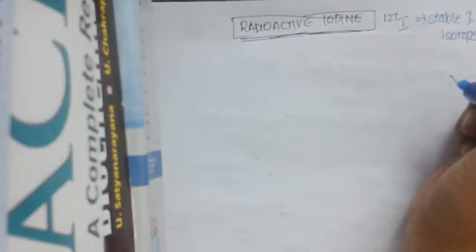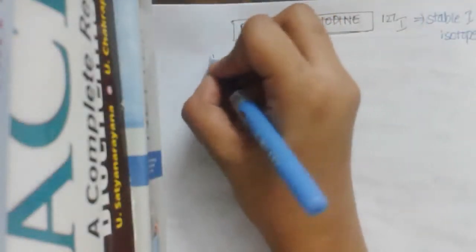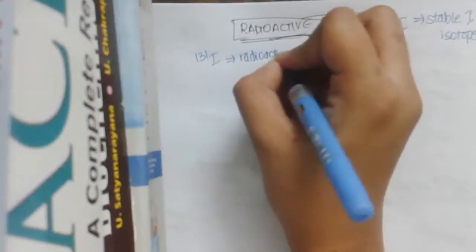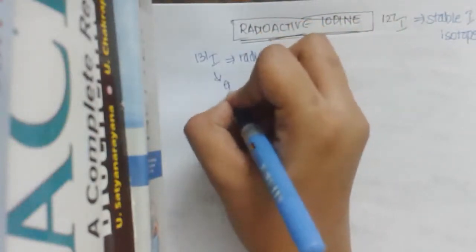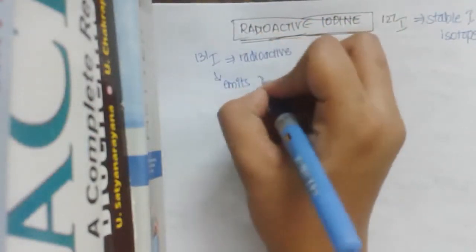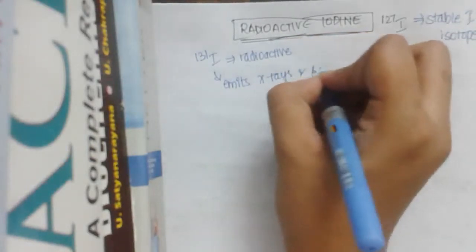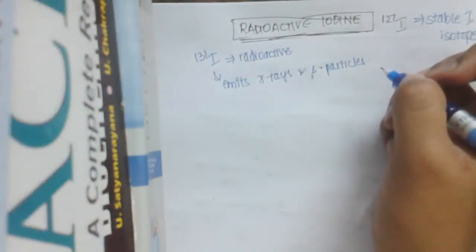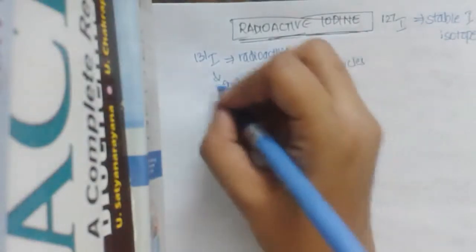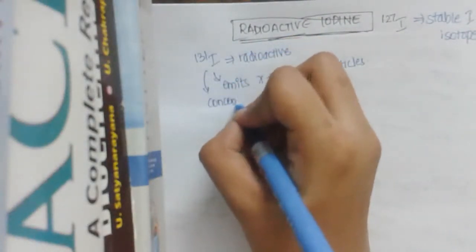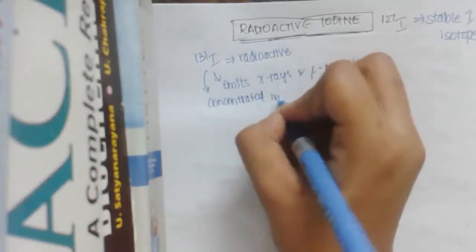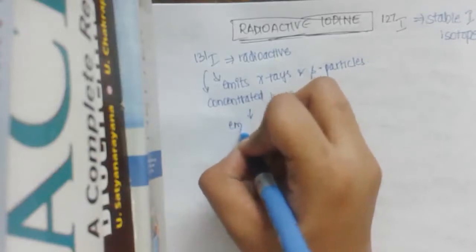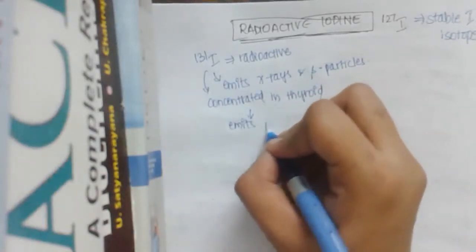But iodine-131 is radioactive. This iodine-131 emits x-rays and beta particles, so it is used in tracer studies. Iodine-131 is concentrated in thyroid and then emits radiations.